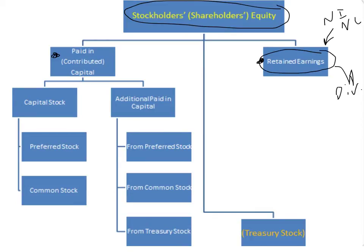The third part, usually presented at the very bottom of the section, is what's called treasury stock. And if you see, I made them yellow and put it in parentheses. Why? Because treasury stock is subtracted from the whole equity section.